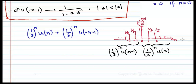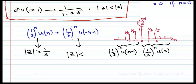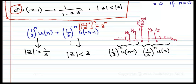Note that u(n) covers the positive side only; u(-n-1) covers the left side. For (1/3)^n · u(n), the ROC is |z| > |a| = 1/3. For the anti-causal part (1/3)^(-n) · u(-n-1), we convert: (1/3)^(-1)^n = 3^n · u(-n-1), so the ROC is |z| < |a| = 3, giving |z| < 3.